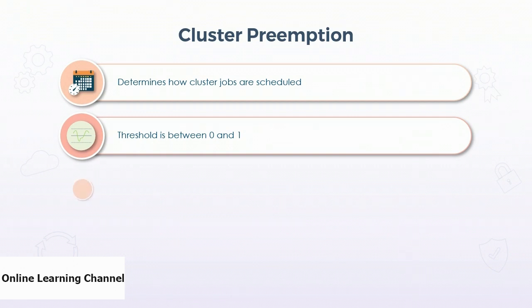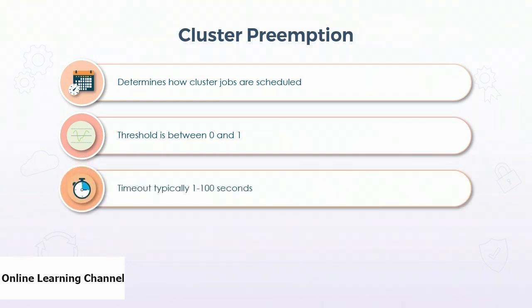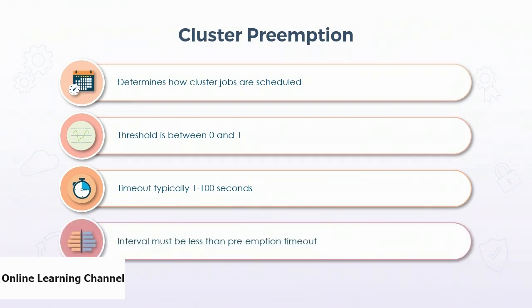0 disables preemption, whereas a setting of 1 will tell the scheduler to be aggressive when enforcing preemption for fair sharing. Effective settings are usually somewhere in between. There's also a preemption timeout — a number of seconds that a process has to be starved for resources before the scheduler will consider preemption to give it processor time. This needs to be set on a case-by-case basis, but it's typically between 1 and 100 seconds. Finally, there's an interval, which is how often the scheduler will look at the processes to consider preemption. This should logically be set to something less than the preemption timeout.